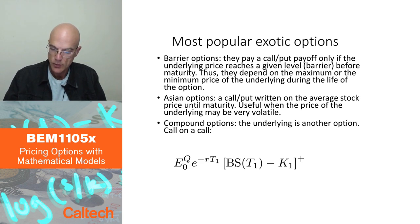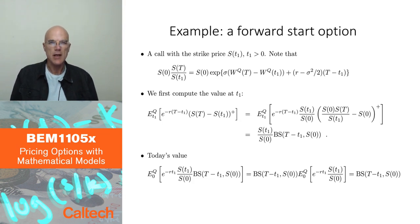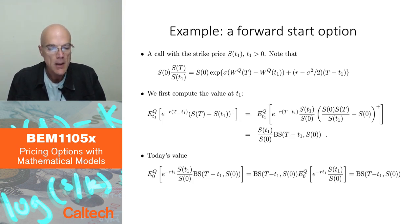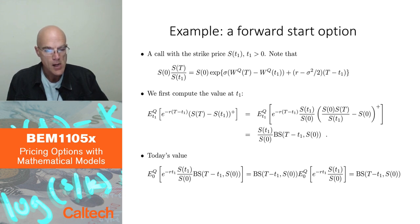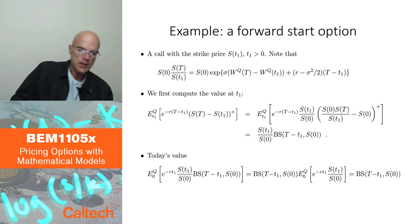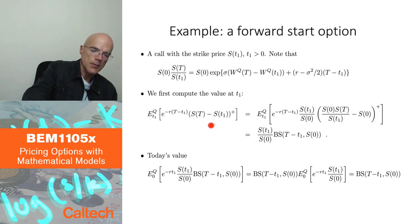Let's do two more examples of options which we can actually compute the price of. The first one is a forward start option — not that these two examples are especially popular, but it's a nice way to illustrate how the risk-neutral pricing methodology works. Here is the payoff in mathematical terms: it's a call option on a stock but with a strike price which is not known today.